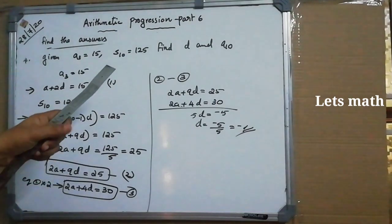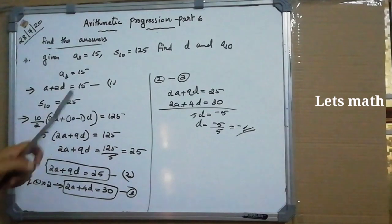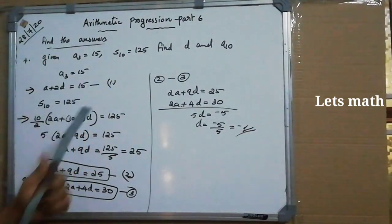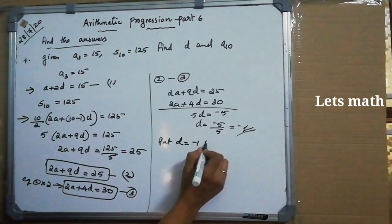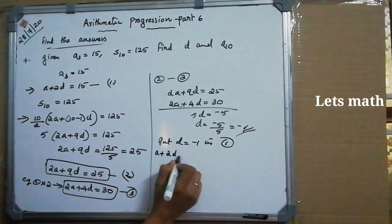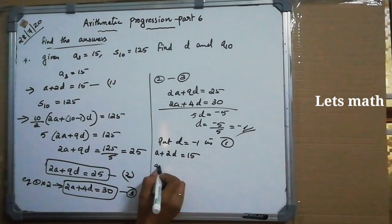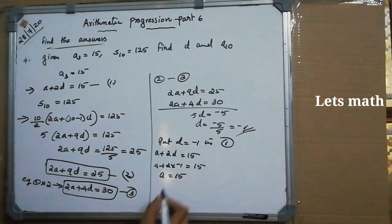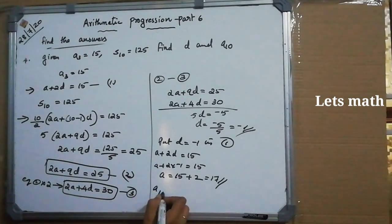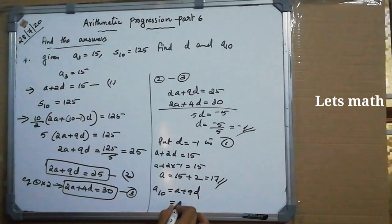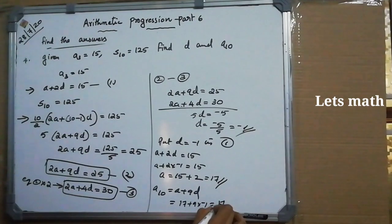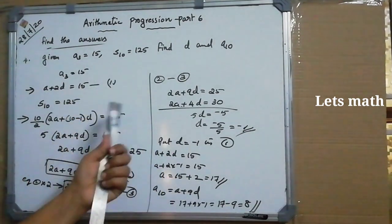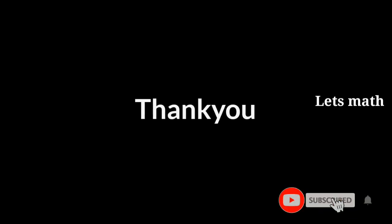Substituting D = -1 into equation 1: A + 2(-1) = 15, so A = 17. Now A10 = A + 9D = 17 + 9×(-1) = 17 - 9 = 8. So D = -1 and A10 = 8.